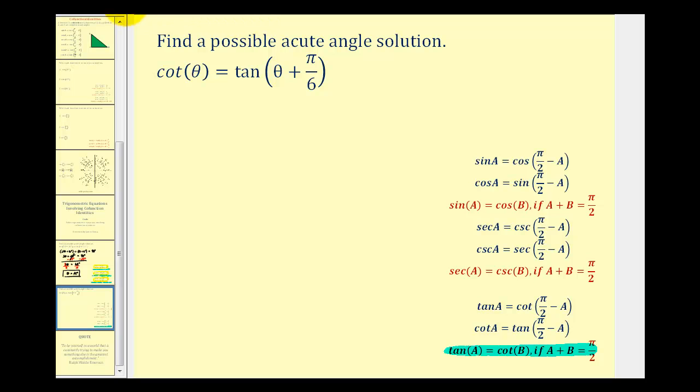So here we'll have theta plus the quantity theta plus pi over six must equal pi over two radians. Again, we'll combine like terms and solve for theta. So we have one theta plus one theta, that's two theta, plus pi over six, it must equal pi over two radians.